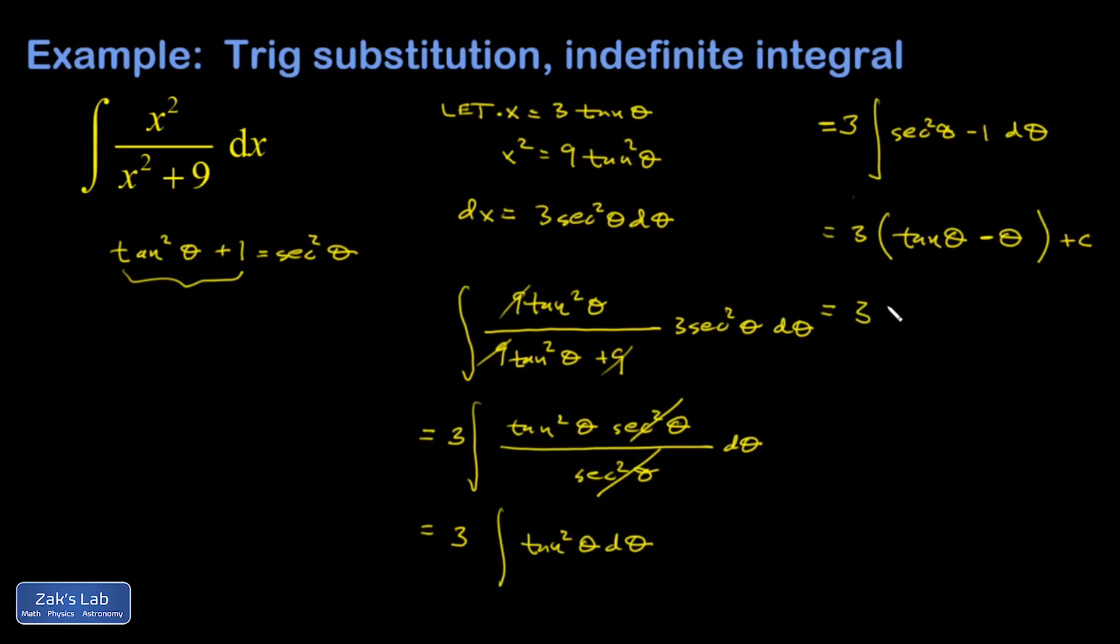And again, I have to turn everything back into x's for this to be finished. That means I've got to solve for theta up here where I made my substitution. So divide by 3 and I get x over 3 is tangent theta. That means theta is the inverse tangent x over 3.